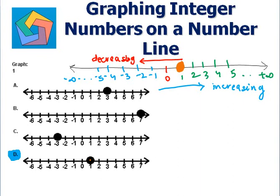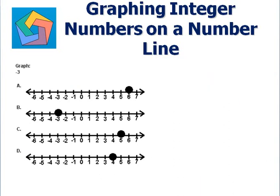Next problem: graph negative 3. Again, on a number line, negative 3 will be on the left-hand side of the zero: 0, 1, 2, 3, minus 1, minus 2, minus 3. Negative 3 will be here. Circle this. This is how negative 3 will be represented, which is the answer in the B part.